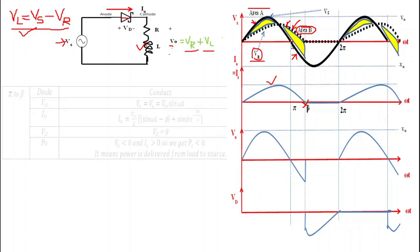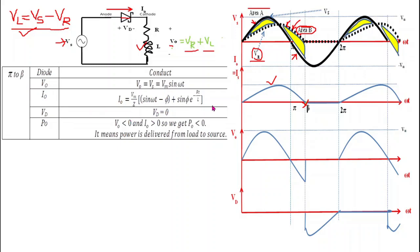From π to β: i₀ is not zero and is greater than zero, so the diode remains forward biased and continues to conduct. When the diode conducts, V₀ = Vs = Vm sin(ωt). The voltage drop across the diode is zero because it acts as a short circuit. We can see that V₀ from π to β is negative because Vs is negative in this region, so this negative part of the Vs waveform appears across the load.